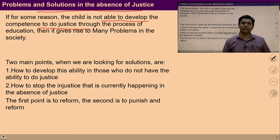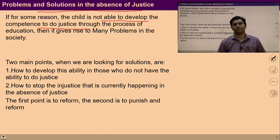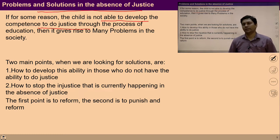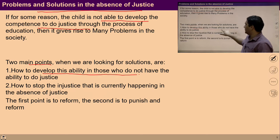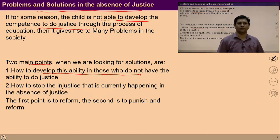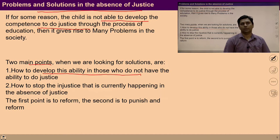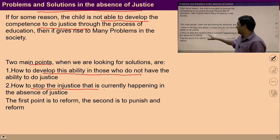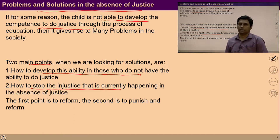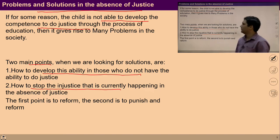If this competence is missed and the child is not able to live in a relationship, the child feels aggressive. As a solution, there are two main points: first, how to develop this ability in those who do not have it — whether it slipped from family or the education system. Second, how to stop the injustice that is currently happening. So two steps are required: ensure the ability to do justice, and stop the injustice.